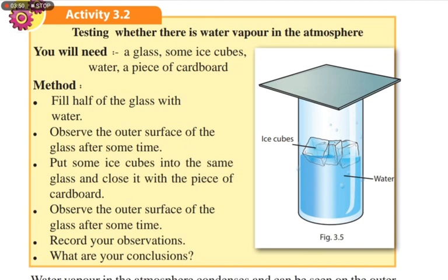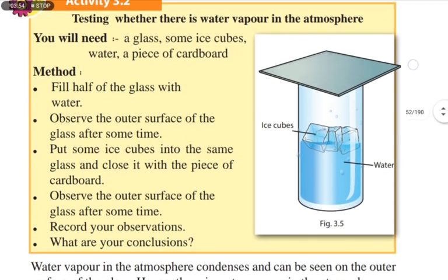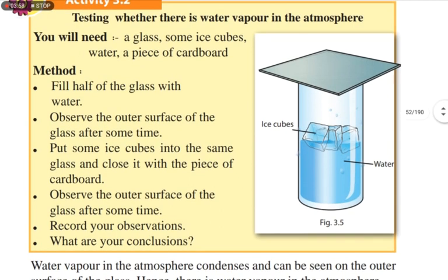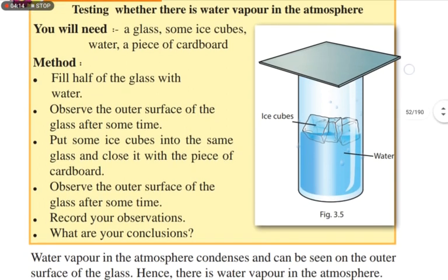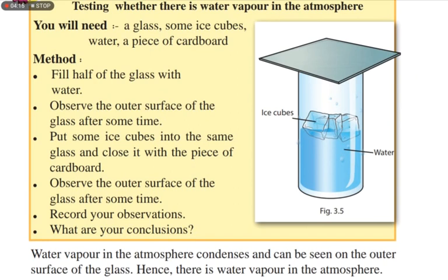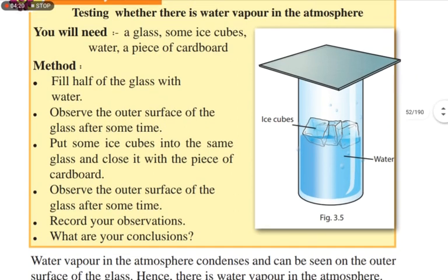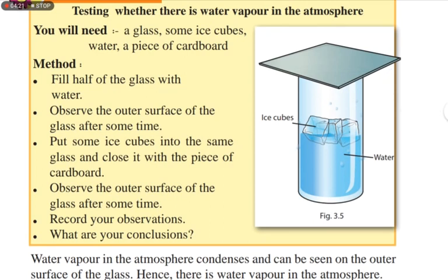For Activity 3.2, you will need a glass, some ice cubes, water, and a piece of cardboard. The method is: first, fill half of the glass with water, then observe the outer surface of the glass after some time. Then put some ice cubes into the same glass and close it with the piece of cardboard.